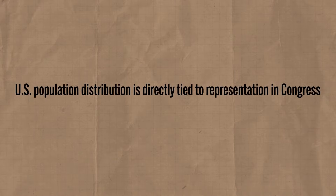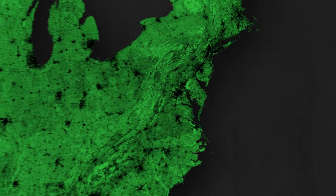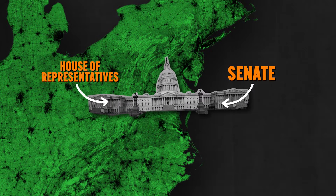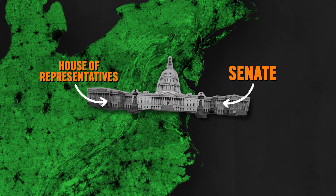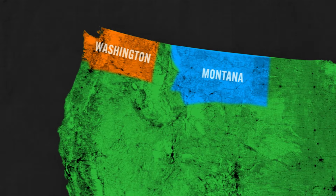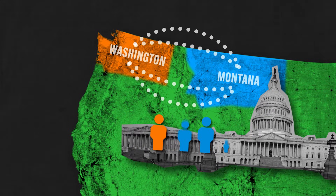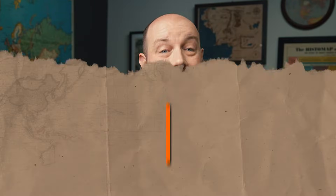The reason that matters is because U.S. population distribution is directly tied to representation in Congress. Congress has two houses: the Senate and the House of Representatives, and between these two houses all federal laws are made. In the House, each state has a number of representatives proportional to their population. So if the census finds that millions of people move from Washington to Montana, then Washington is going to lose seats in the House while Montana will gain seats. In this case, population distribution is affecting the power that various states can have.